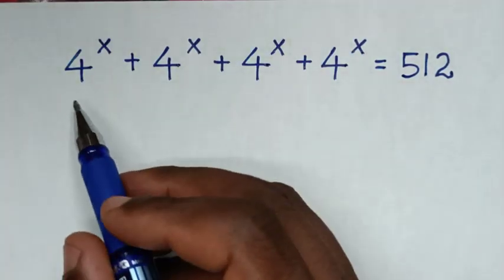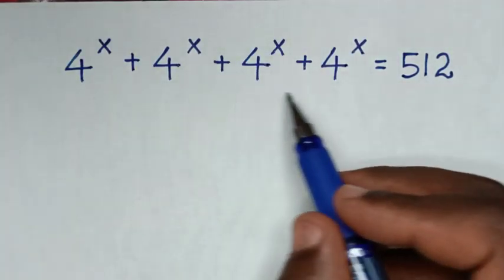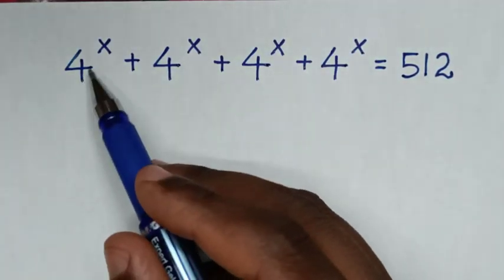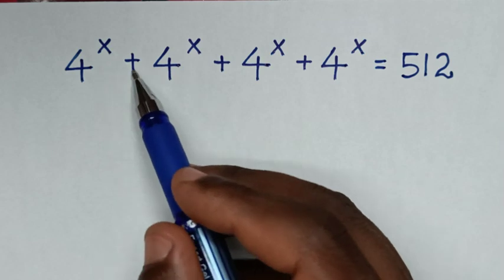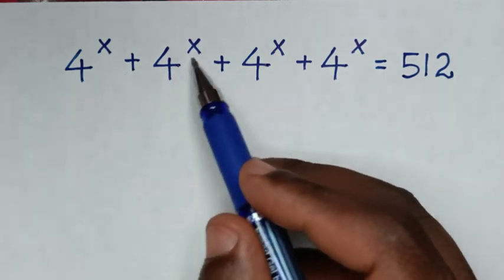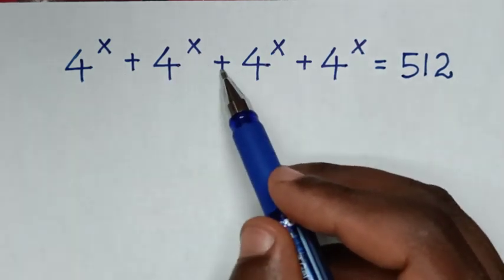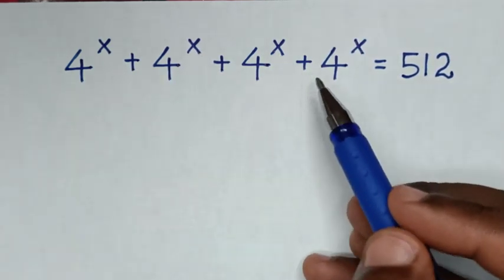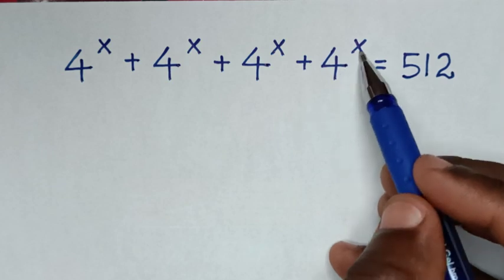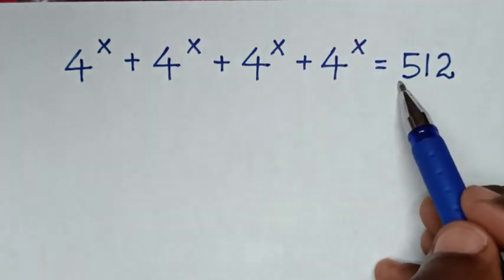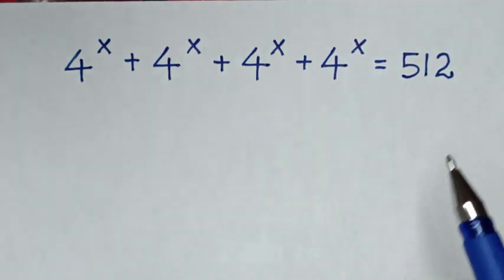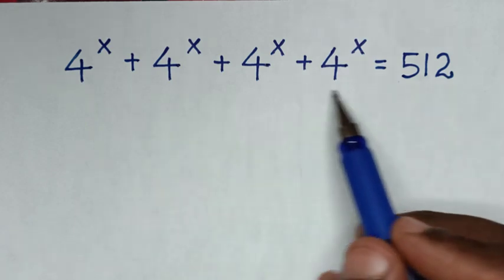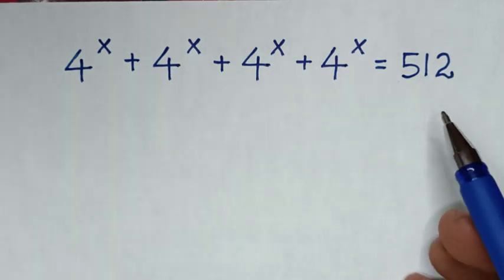Hello, you're welcome to solve this math problem which is 4 power of x plus 4 power of x plus 4 power of x plus 4 power of x is equal to 512. To find the value of x from this equation.